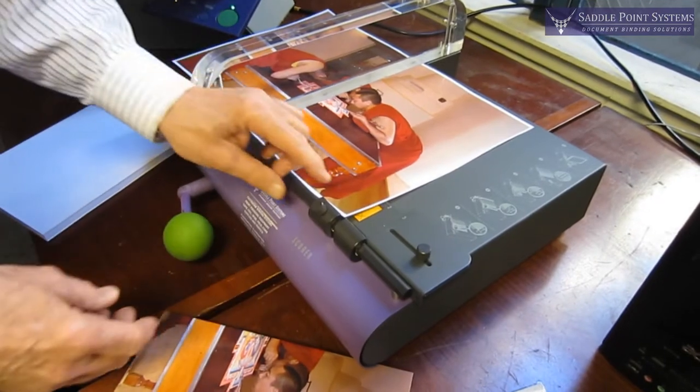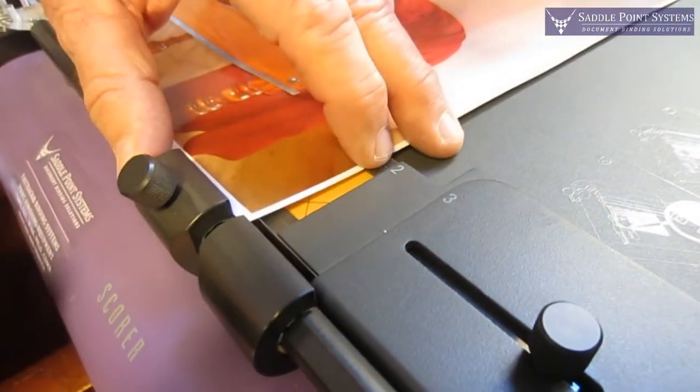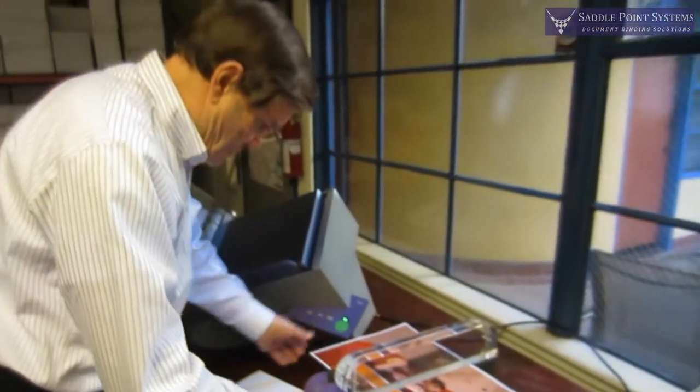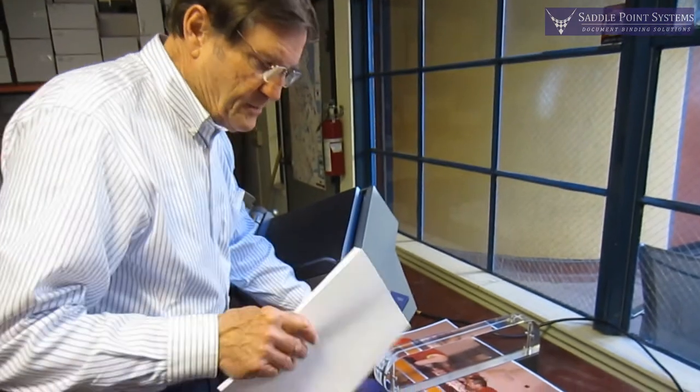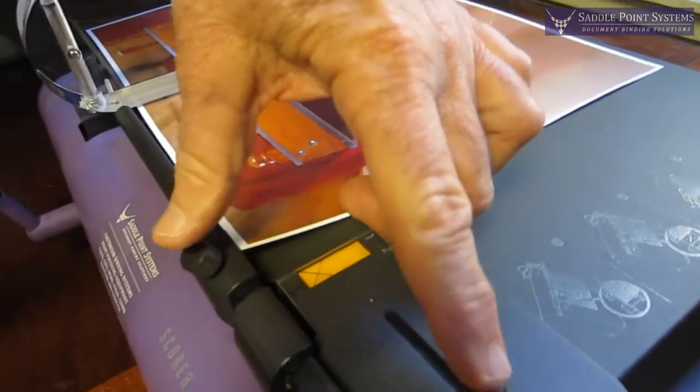And then what I'm going to do is set it up so that crosshair is at the edge of the sheet. And I'm also going to make the width of the book the same as this orange area here. And that's done with these two knobs.